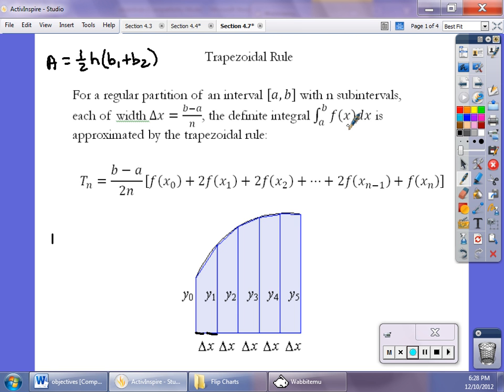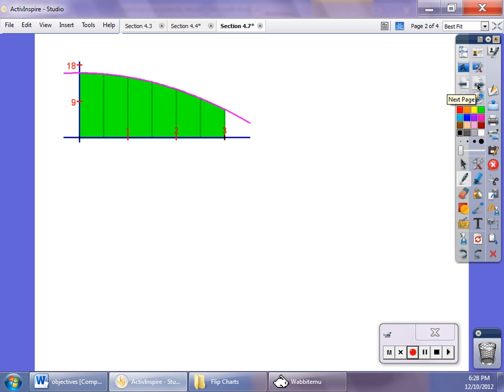Let's look at an example. We have the integral from 0 to 3 of 16 minus x squared dx with n equals 6 trapezoids. First, find delta x—that's your height. It's 3 minus 0 over 6, or one-half. So this is one-half, then that goes up to one, and so on.